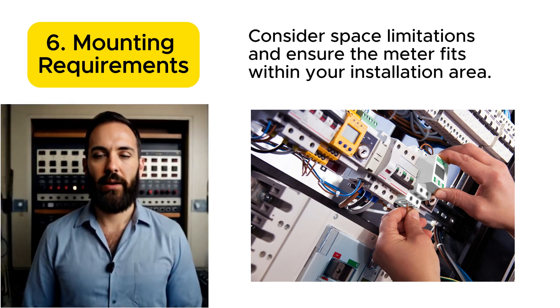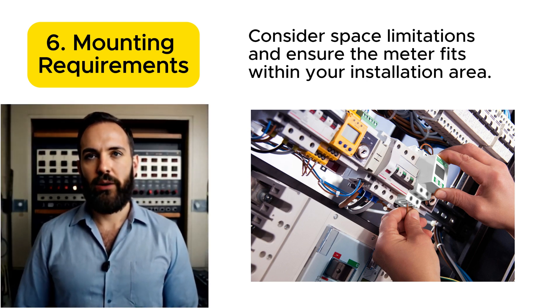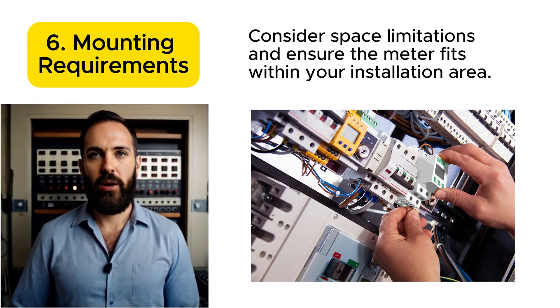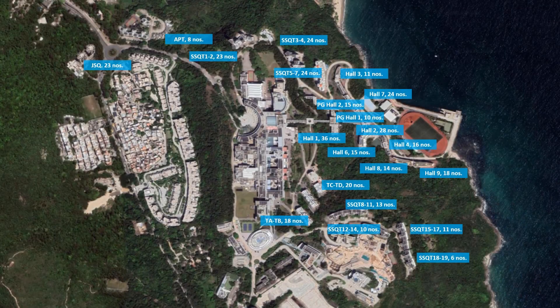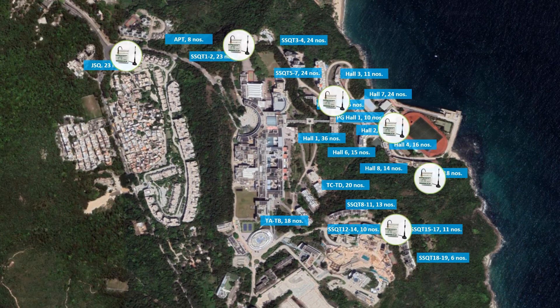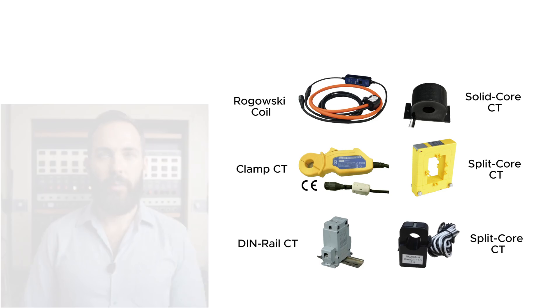Number six: mounting requirements. Consider space limitations and ensure the meter fits within your installation area. If the wiring cables must be minimized or the workstation is far away from the site, then maybe a wireless type of metering should be considered. The type and size of CT should also be taken into account.